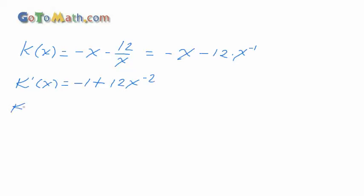And we're going to go ahead and find the second derivative since we're on a roll here. So the derivative of negative 1 is 0. We take the negative 2, bring it out front. We get negative 2 times 12 is 24x to the negative 3. And of course, we're going to want to rewrite this with positive exponents. So we have negative 24 over x to the third power.